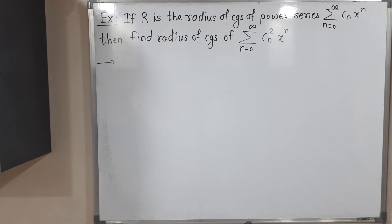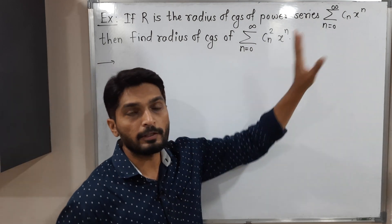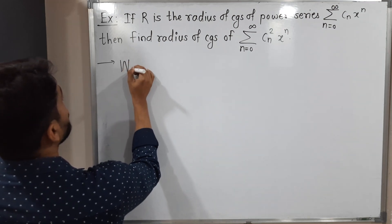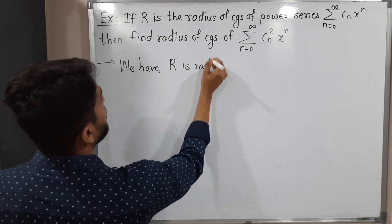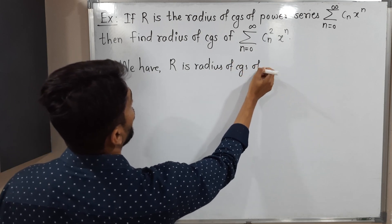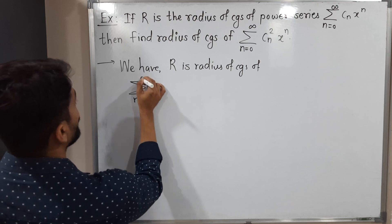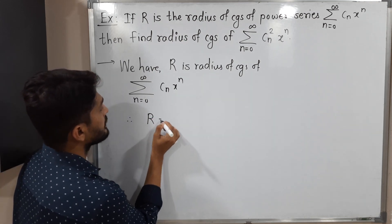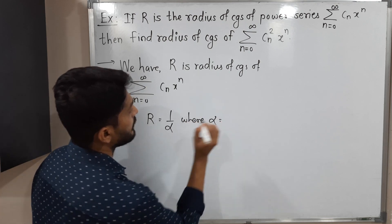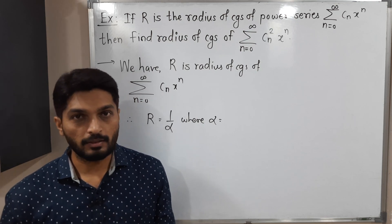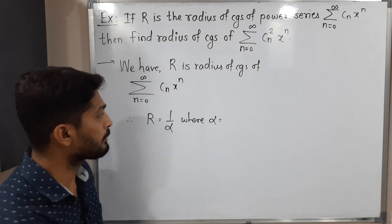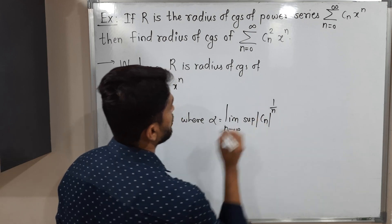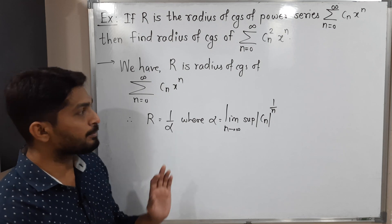For the second example, the given information is again that R is the radius of convergence of the standard power series summation cₙ xⁿ. This time I am using the other formula for α: limit as n tends to infinity of the supremum of |cₙ|^(1/n), and R = 1/α.